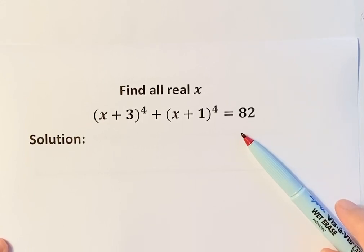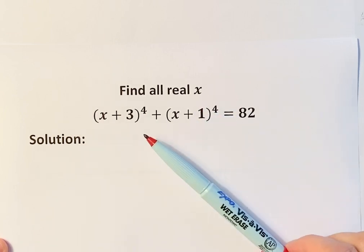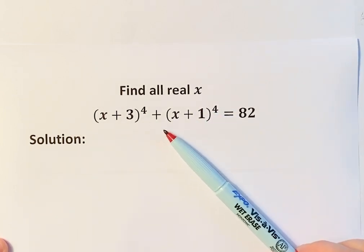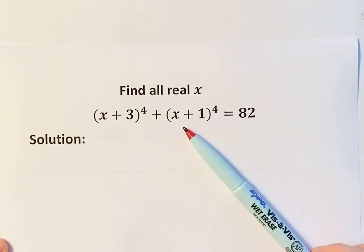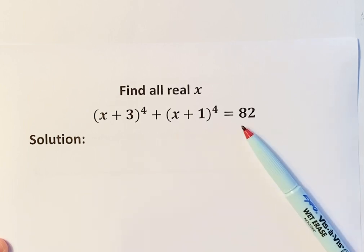Hello everyone. In this video, I'm going to solve the equation: find all real solutions for (x+3)⁴ + (x+1)⁴ = 82.